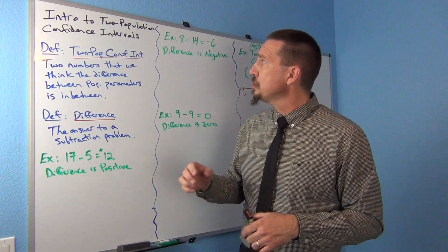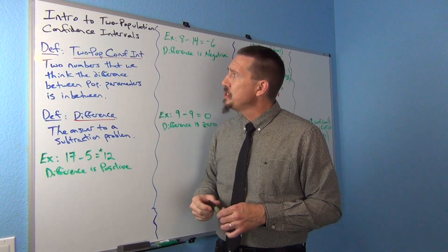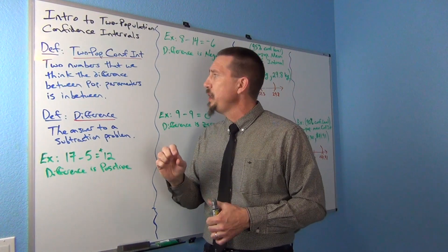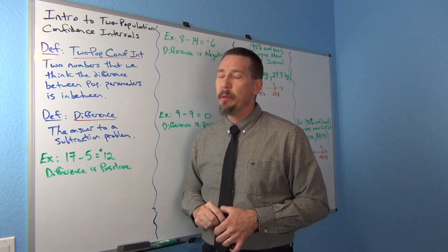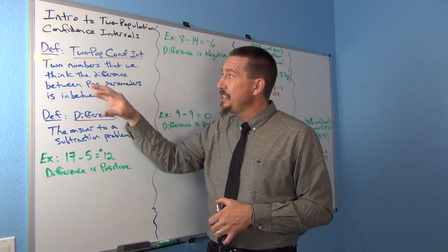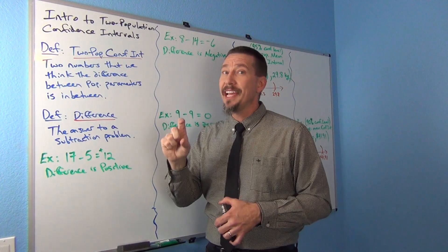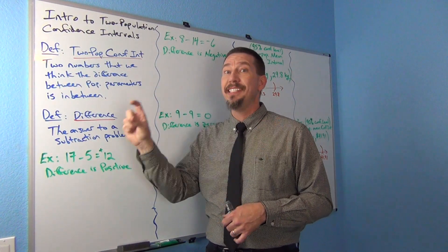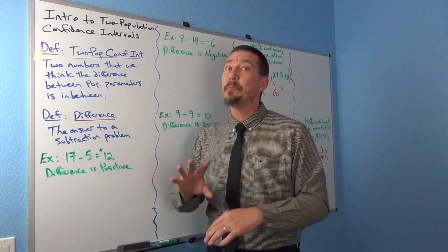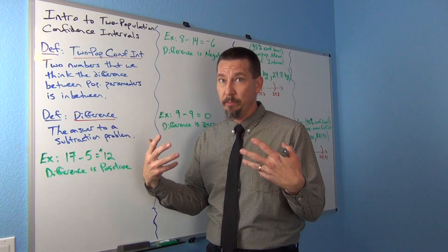So let's start with definitions. Two population confidence intervals are two numbers that we think the difference between the population parameters is in between. Now that's a very important definition — this confidence interval is actually measuring a difference. It's not measuring population one, it's not measuring population two, it's measuring the difference between them.